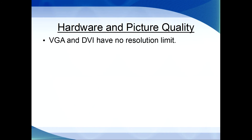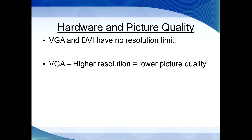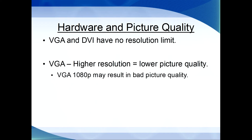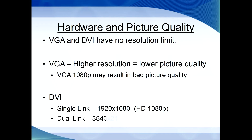Even though there is no resolution limit to what you can use on a VGA cable, the picture quality will degrade as your resolution goes up. VGA's picture quality may begin to degrade if you use it to run 1080p on your monitor, but with DVI you won't have that problem. DVI has two types of high-quality cable, known as single-link and dual-link. The difference between the two is how much power is sent through them. Single-link will allow you to reach 1080p before you have any problems, and dual-link DVI cables will allow you to run 4K resolution on one monitor.